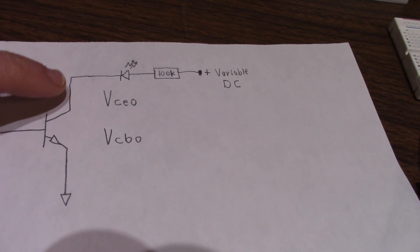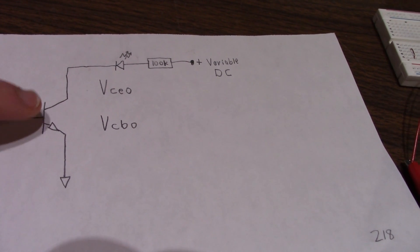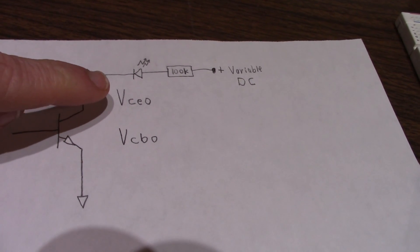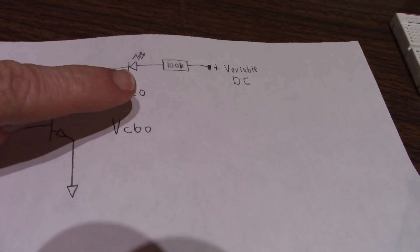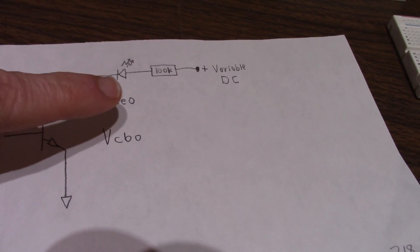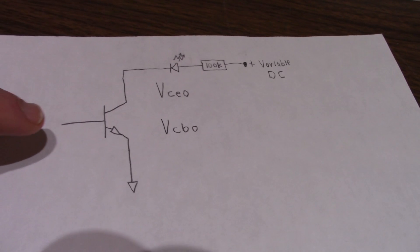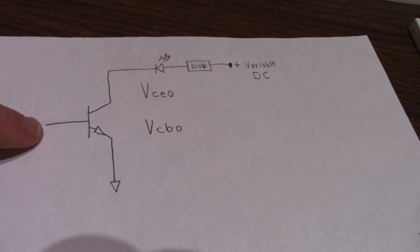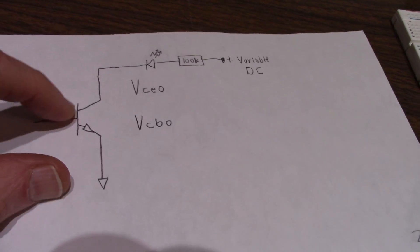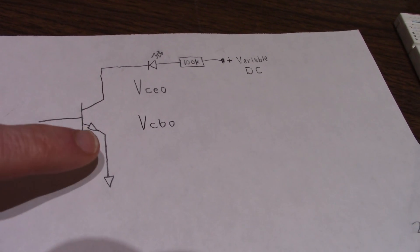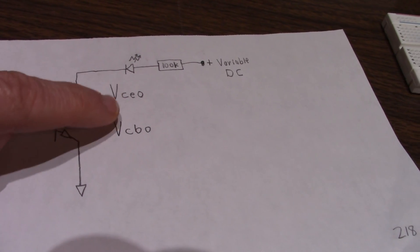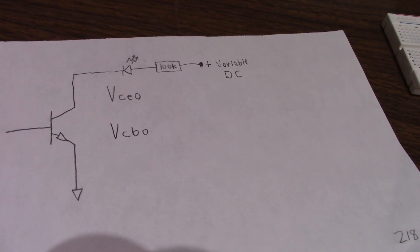So, I can tell when the transistor is actually going to break down. The breakdown voltage is given as VCEO, which is voltage collector-emitter open. When they say open, that means the base is open. And they might also provide the VCBO, which is the collector-to-base voltage with the emitter open.